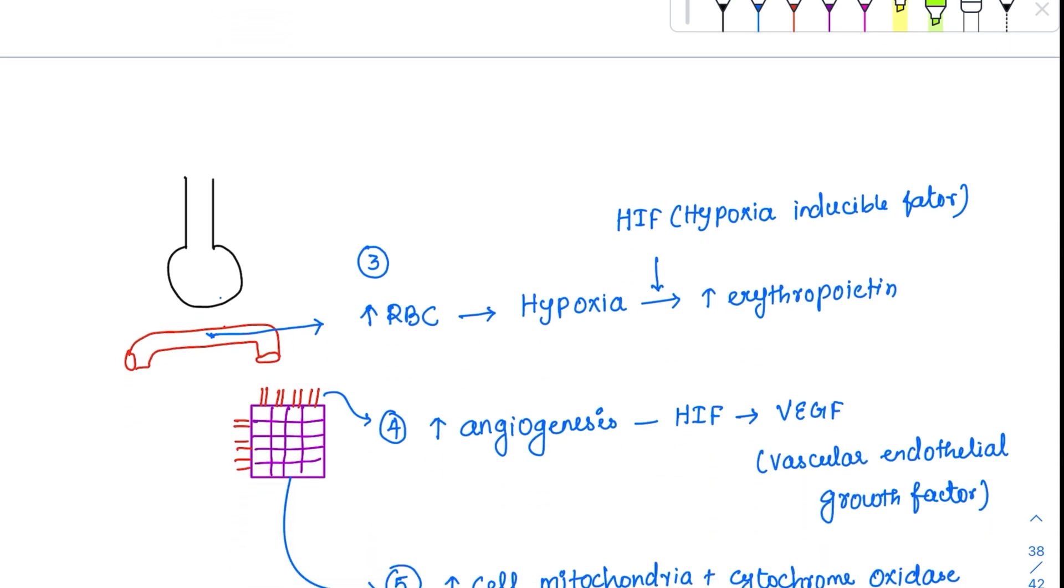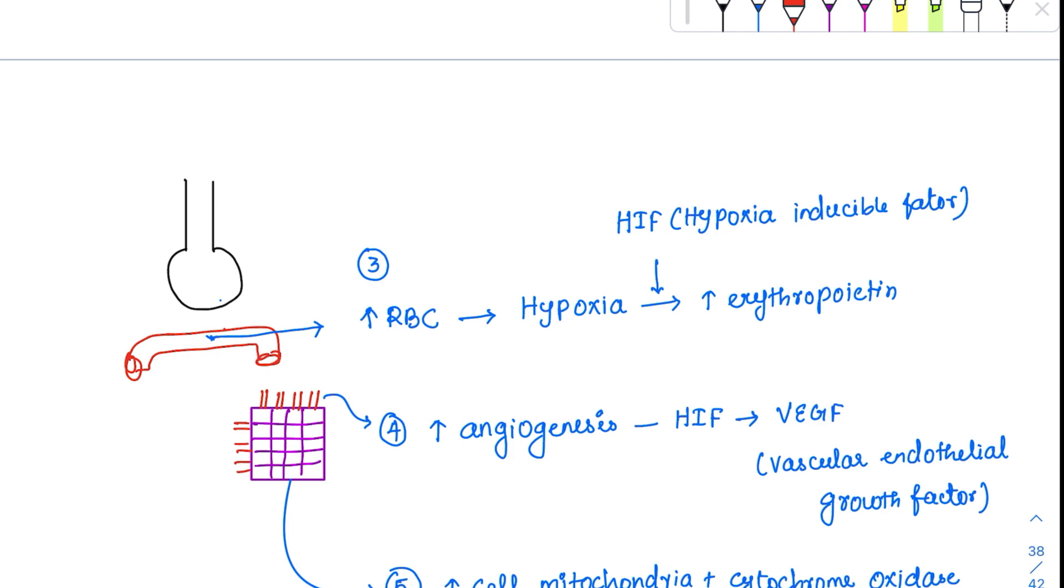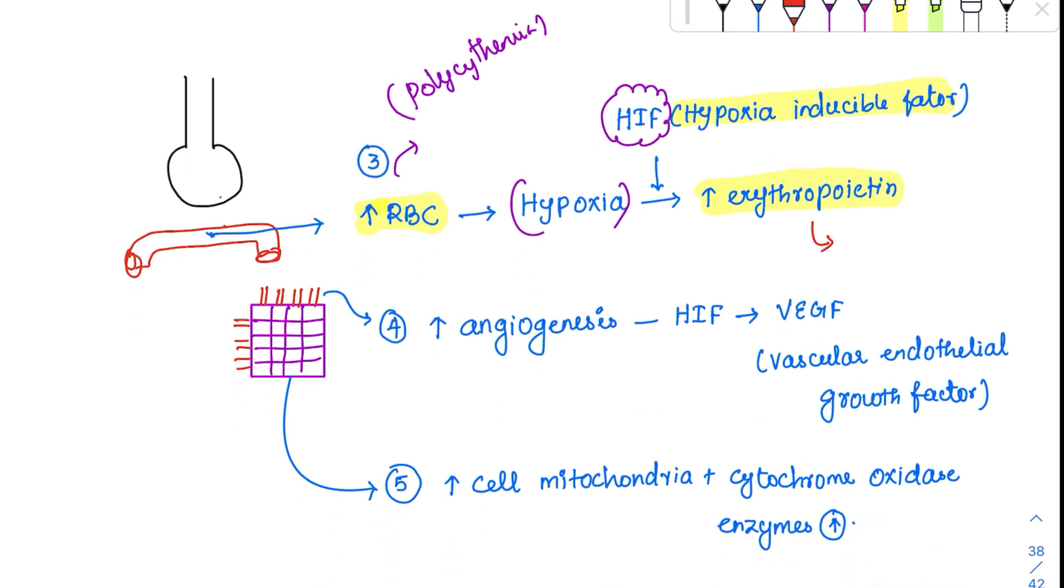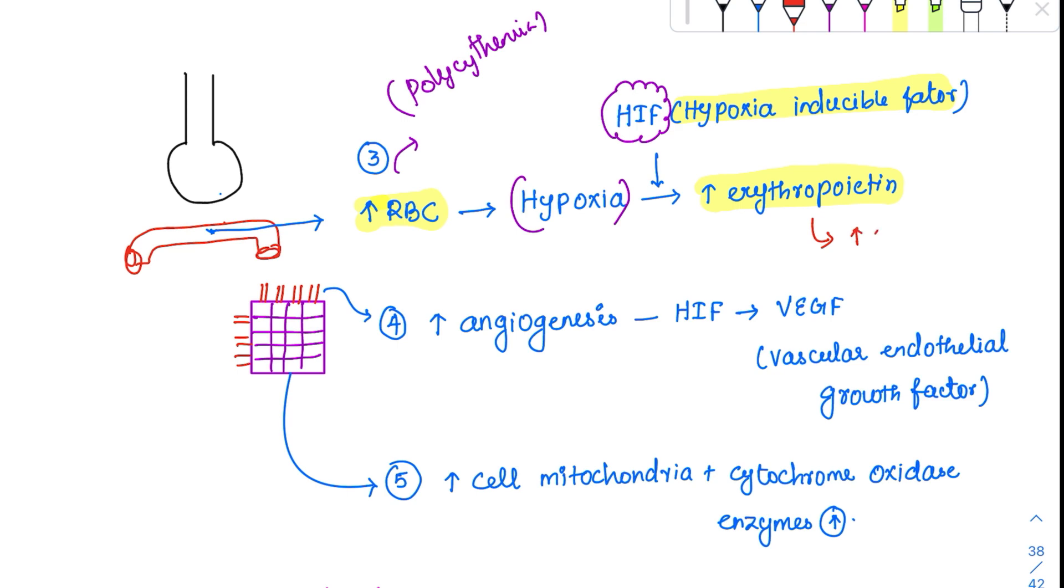Third, at the circulatory level, there's an increase in RBC count, called polycythemia. This is natural in highlanders. Hypoxia causes the kidneys to produce hypoxia inducible factor (HIF). HIF stimulates erythropoietin, which stimulates RBC production. It increases colony forming unit erythroblast, directly stimulating primitive cells so more RBCs can be produced.